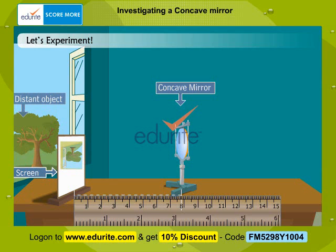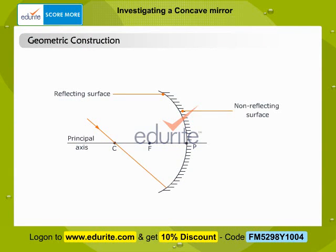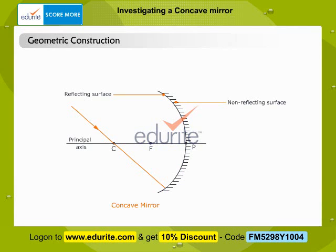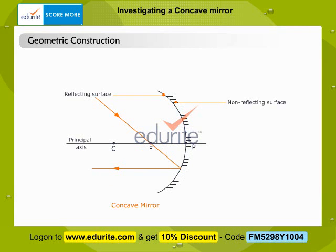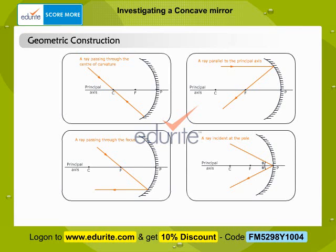The image formed varies with the position of the object in front of the mirror. We shall now place the object at various positions and check the image formed. To know the position and nature of the image formed due to reflection of light from a mirror, two rays coming from the same point of an object are considered. A ray passing through the center of curvature retraces its path after reflection. A ray parallel to the principal axis passes through the focus after reflection. A ray passing through the principal focus emerges parallel to the principal axis after reflection. A ray incident at the pole gets reflected according to the laws of reflection. The image is formed at the point of intersection of these reflected rays.